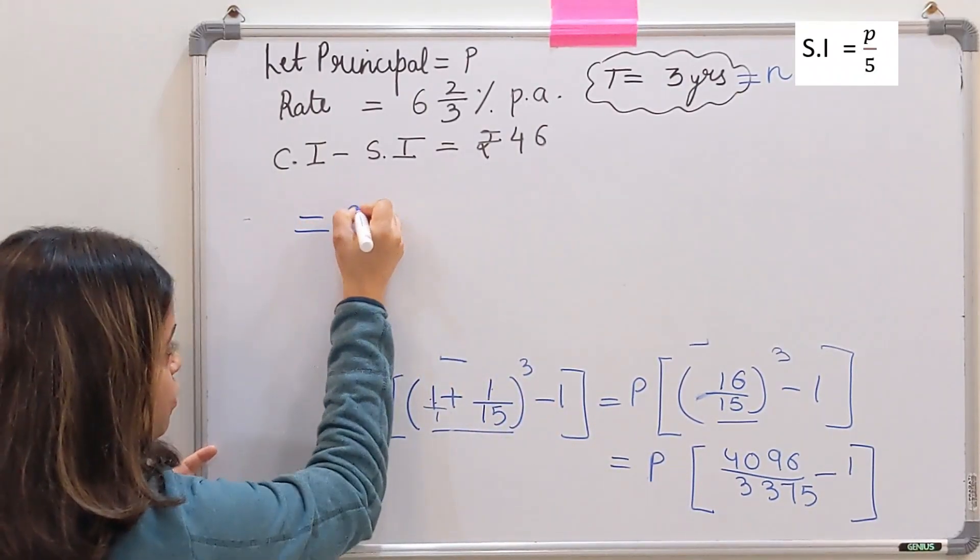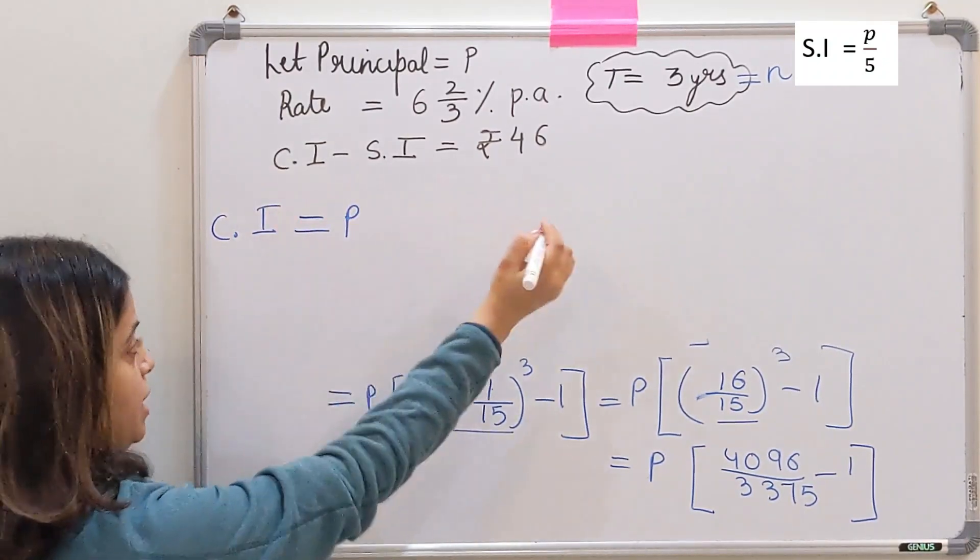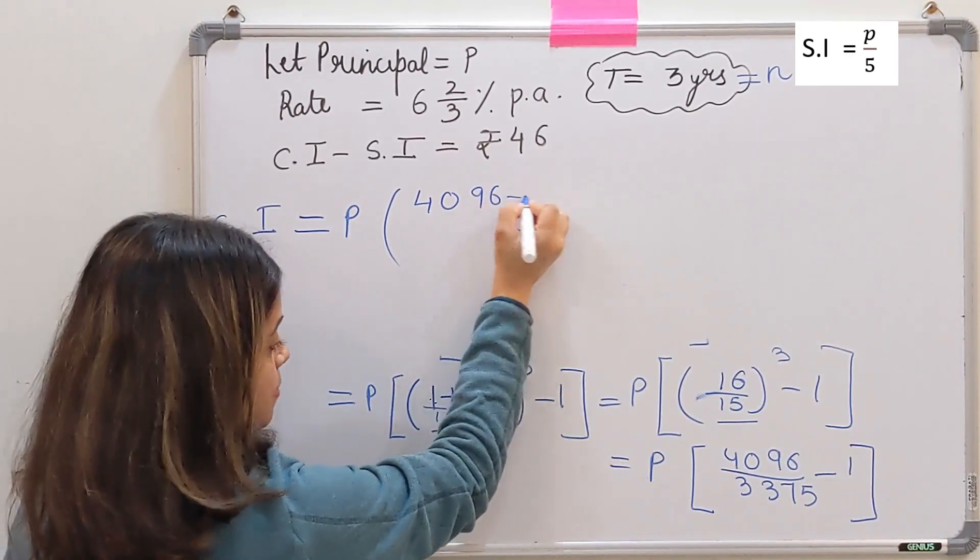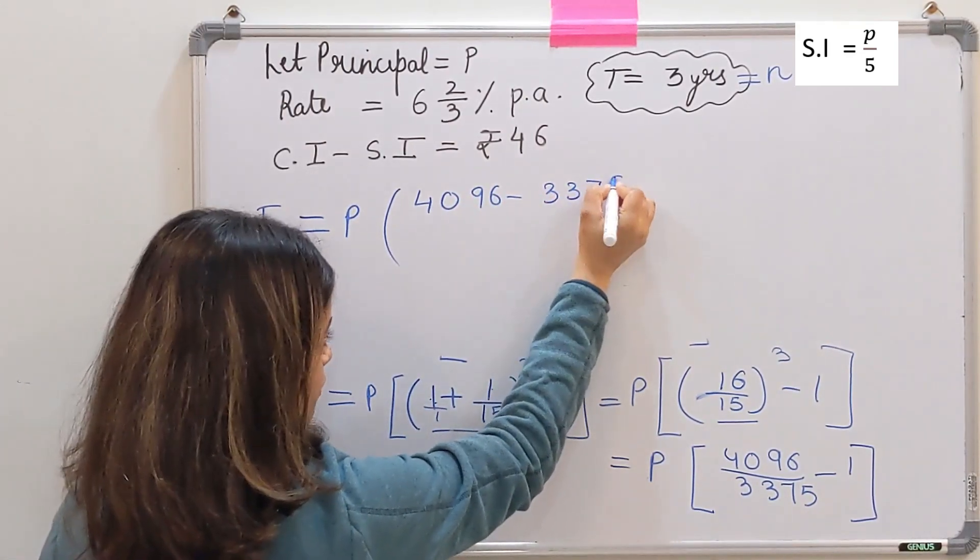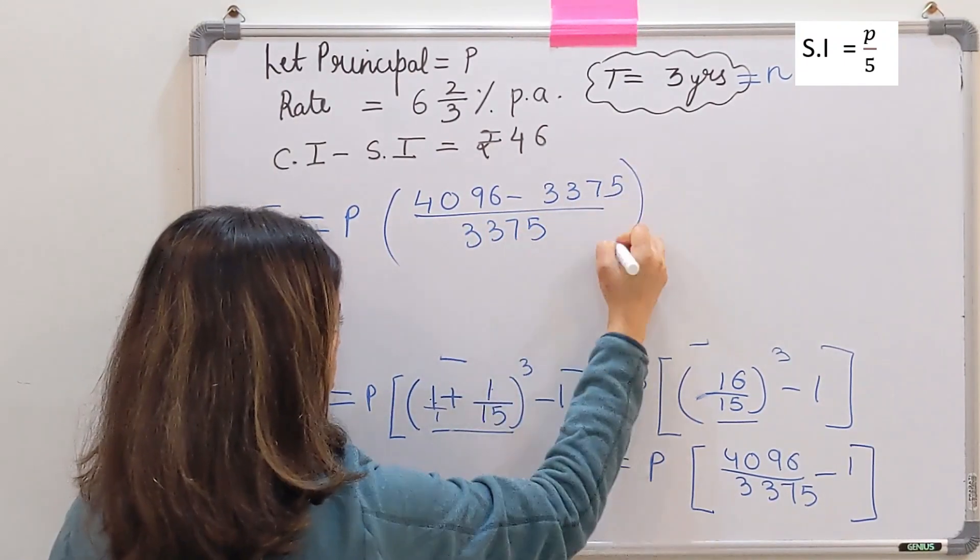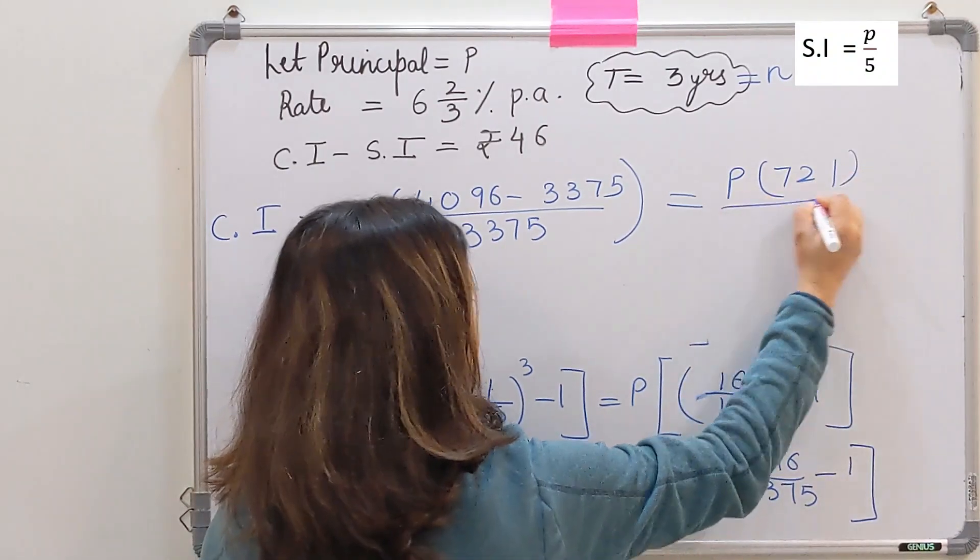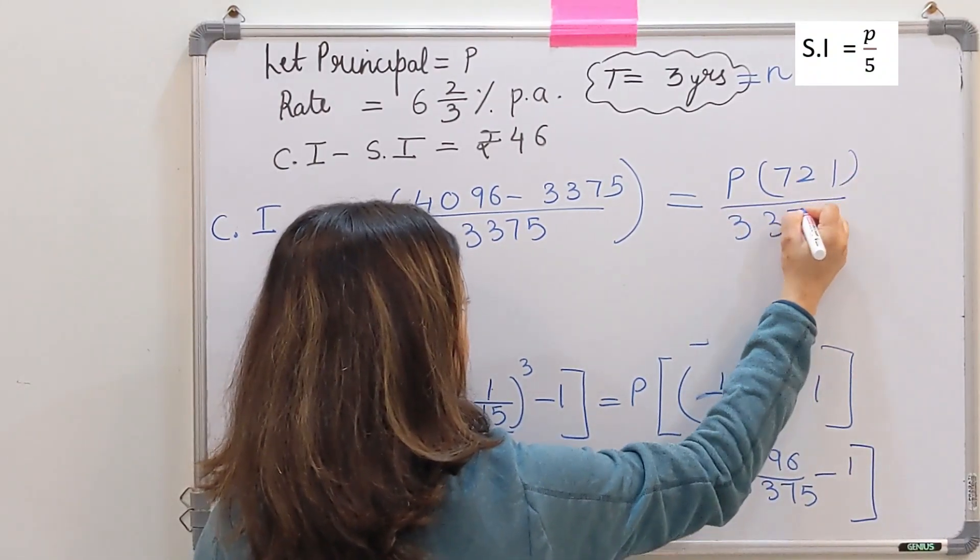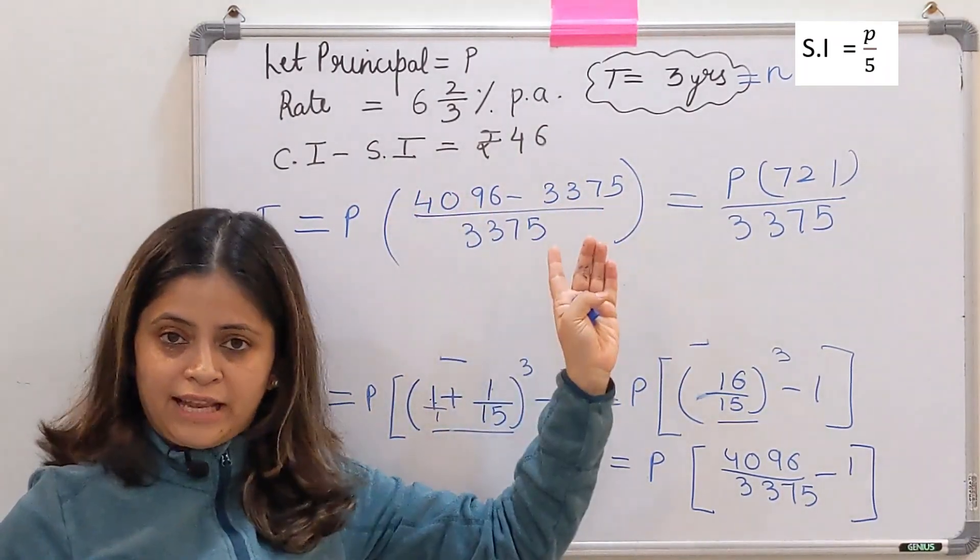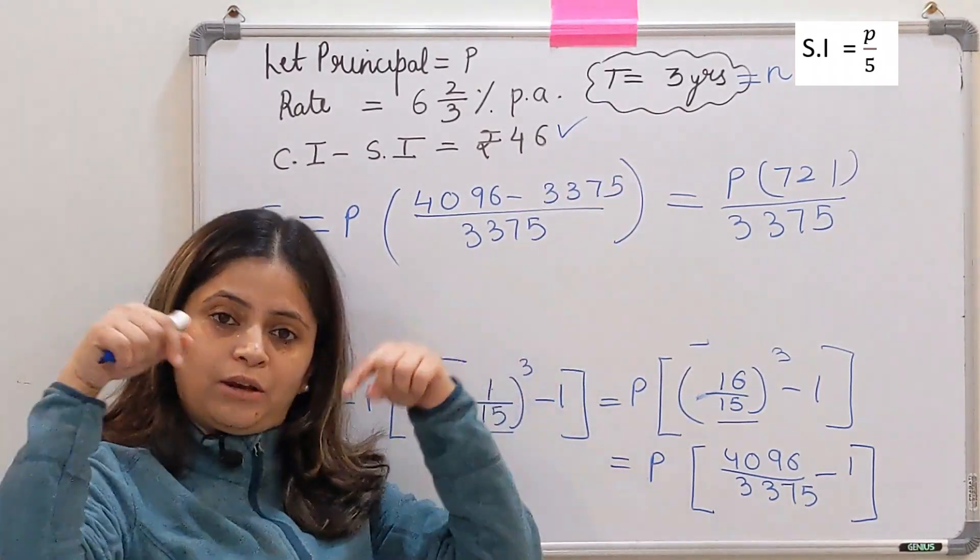Solving further, compound interest equals P[(4096 - 3375)/3375] = P × 721/3375. This is our compound interest. Simple interest we already calculated was P/5. The difference between these two is 46.